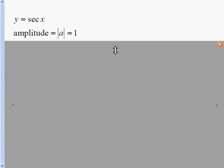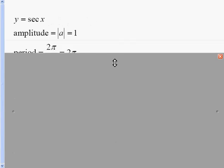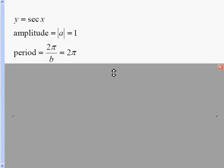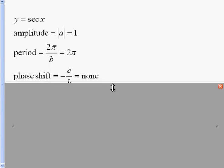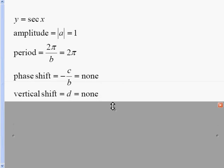Let's look at y equals the secant of x. Amplitude is 1. Our period is 2π over b, b being the number in front of x. Since there is no number, it's understood to be 1, so our period is 2π. There is no phase shift for this problem, and there is no vertical shift.